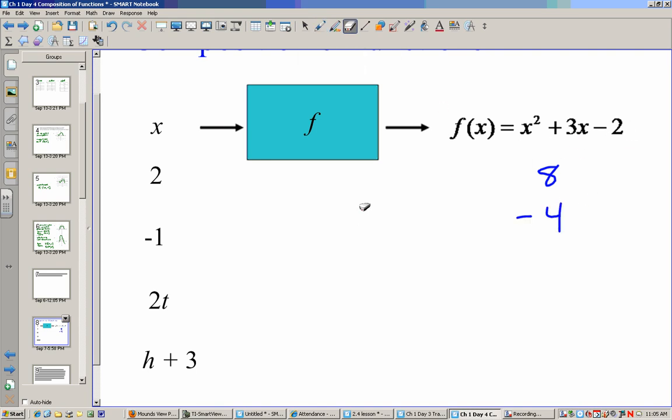It gets a little trickier when we have variables, because when we put variables in, we have to put parentheses around them. So it would be (2t) squared plus 3 times 2t minus 2. So with this, it would be 4t squared, 2 times 3 is 6t, and then minus 2.